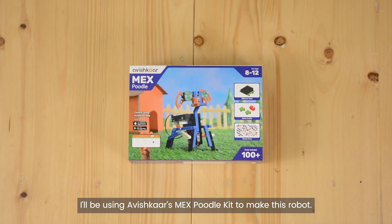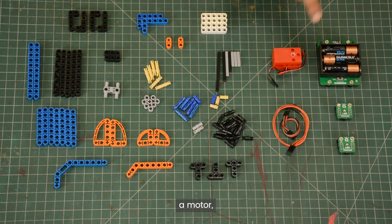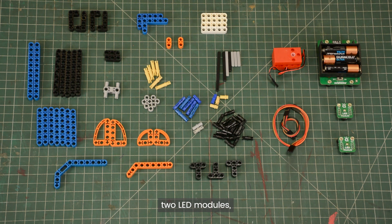I'll be using Avishkar's next poodle kit to make this robot. The parts I'll be using are a lot of plastic parts, a motor, two LED modules, the MEXcore brain and some wires.